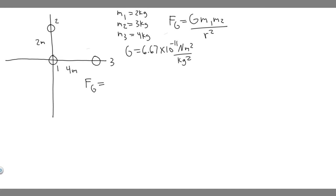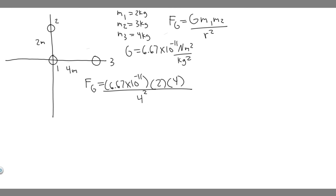Let's start by finding the force between object 1 and object 3 — you could say this is 1 on 3 or 3 on 1, they're the same. So: G is 6.67 times 10 to the minus 11, multiplied by the mass of object 1 which is 2 kilograms, then by the mass of object 3 which is 4 kilograms, divided by the radius squared, which is 4 squared. When you do this you get approximately 3.34 times 10 to the minus 11 newtons.